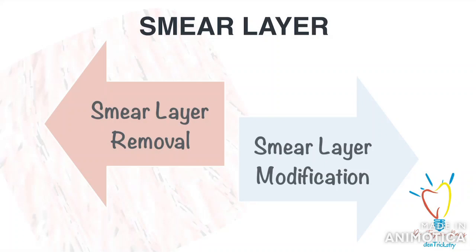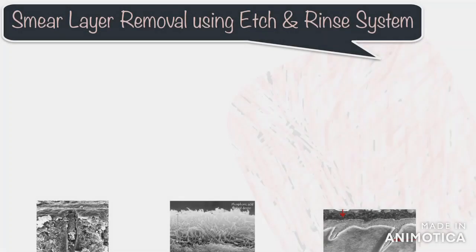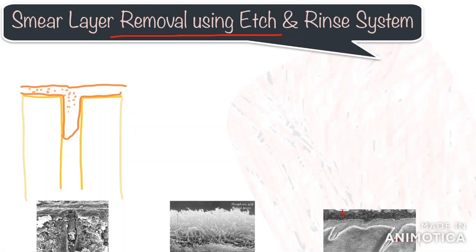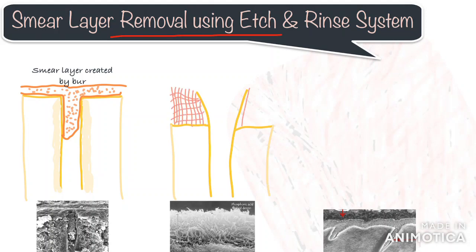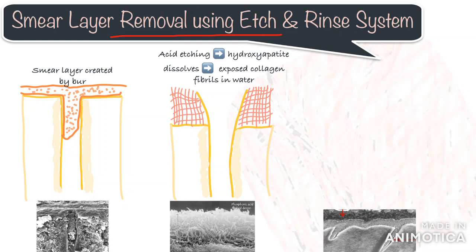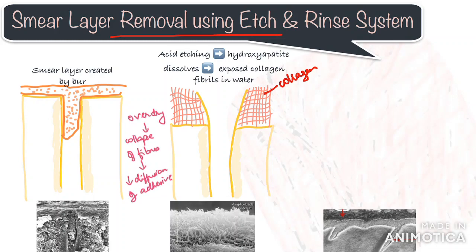To improve permeability on dentine, we must first deal with the smear layer. There are two options: one is removal of the smear layer before bonding following an etch and rinse procedure, and second is use of bonding agents which can penetrate through the smear layer. In the etch and rinse approach, phosphoric acid dissolves the mineralized part of the dentine — hydroxyapatite — to a certain depth, and leaves the dentinal collagen network suspended in water. The water prevents the collagen fibers from collapsing.